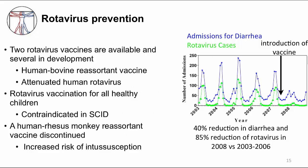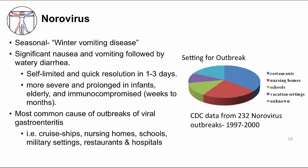The next virus is norovirus, which is becoming more and more important now that the vaccine has decreased rotavirus infections. Norovirus used to be called the winter vomiting disease. It presents with a lot of vomiting, nausea, and low-grade fever, followed by watery diarrhea, which is less prominent compared to rotavirus but can still lead to dehydration. In healthy people, it's a quick, self-limited illness that resolves in one to three days. It's more protracted and severe in immunocompromised patients, infants, and the elderly. It is the most common cause of viral gastroenteritis in the setting of an outbreak — you may have heard of these outbreaks, especially on cruise ships. Outbreaks of norovirus can happen in many different settings.